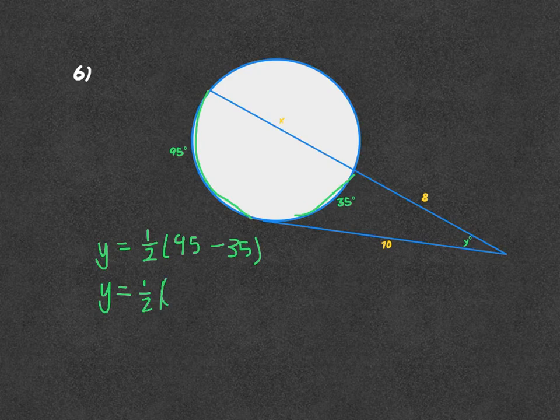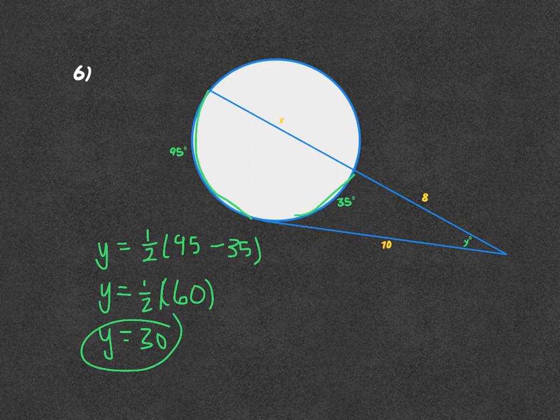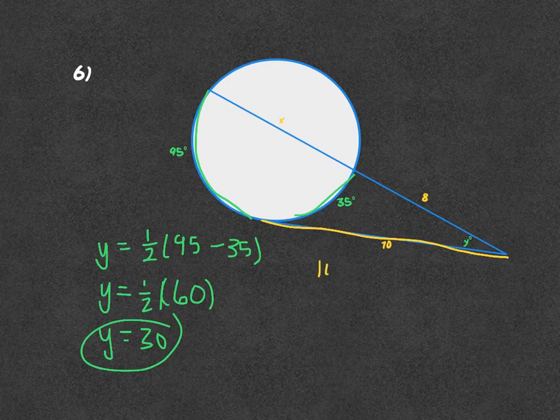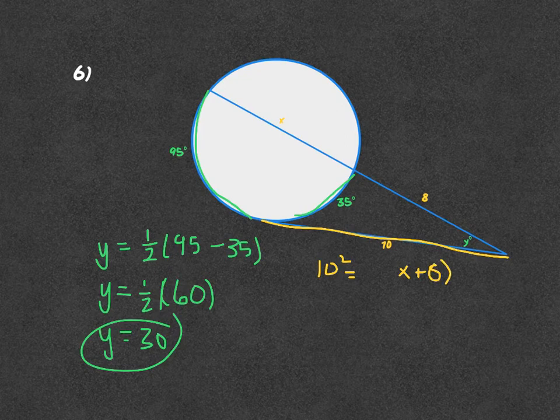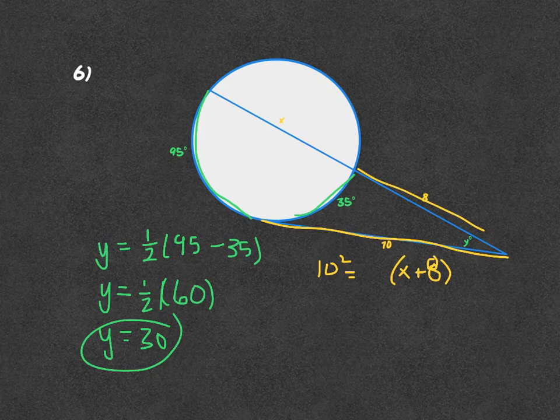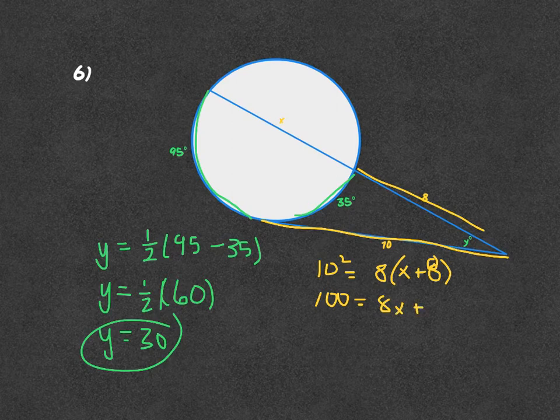And the next part to find X, in this case we have a tangent line. So we get the tangent squared equal to the sum of the secant, X plus 8, times the outside part, which is the 8. So 100 equals 8X plus 64.